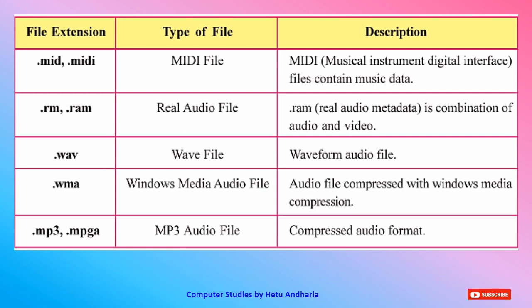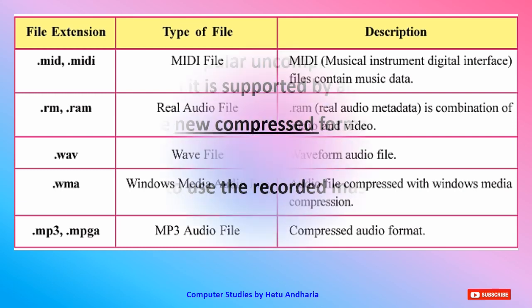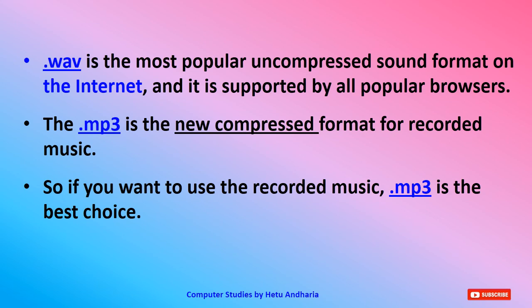The last format is .mp3 or .mpga — actually it should be listed first as it is the most common file format we all use. The file type is MP3 audio file, a compressed audio format. The .wav format is the most popular uncompressed sound format on the internet and is supported by almost all popular browsers. The .mp3 is the newer compressed format for recorded music, most commonly used in songs, and is the best choice for recorded music.